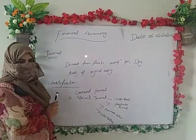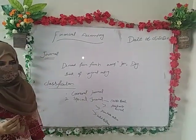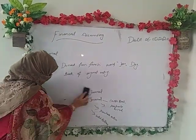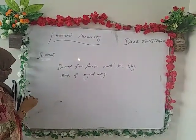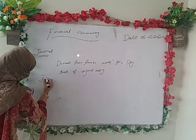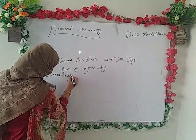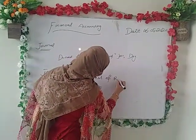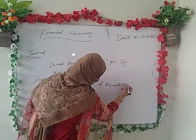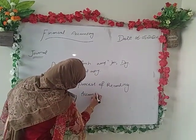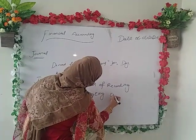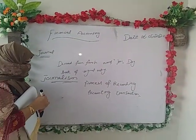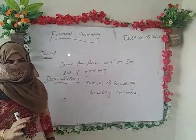Yeh hai journal ki classification. Ab hum jo discuss karenge woh hai general journal, kyunki hamne basic se start karna hai. Journalism basically yeh process hai of recording accounting transactions. This is a process in which accounting transactions are recorded in chronological manner.